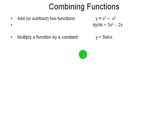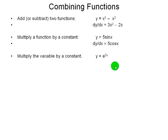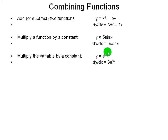Another thing that can be done with a function is to multiply it by a constant. It's quite simple: you just take the derivative of the function and multiply it by the same constant. Now the next one is a little more subtle — here we're not multiplying the function by a constant, but multiplying the variable by a constant. You take the derivative of the function, and e to that same power remains the same, then multiply by the constant that's multiplied by the variable.